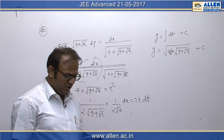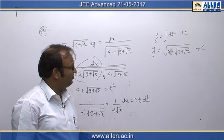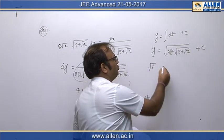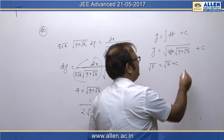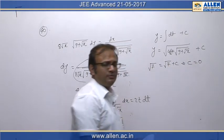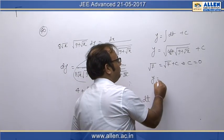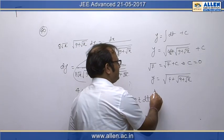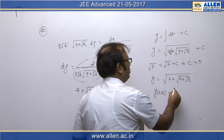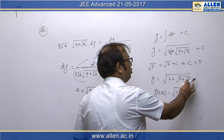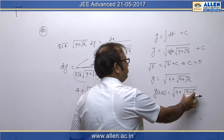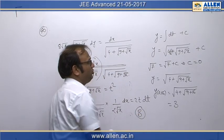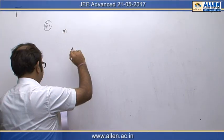To find c, the initial condition y(0) equals root 7 is given. Substituting x equals 0 and y equals root 7, we get root 7 equals root 7 plus c, which implies c equals 0. Therefore y equals square root of 4 plus square root of 9 plus root x. For y(256): this is square root of 4 plus square root of 9 plus square root of 256, which is square root of 4 plus square root of 9 plus 16, giving square root of 4 plus 5 equals 3. So option B is the correct option.